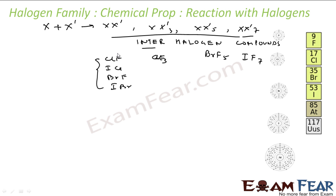Fluorine is more electronegative, so it goes on the right side. Chlorine is more electronegative than iodine, so chlorine goes on the right side. These interhalogen compounds are more reactive than their parent halogens.